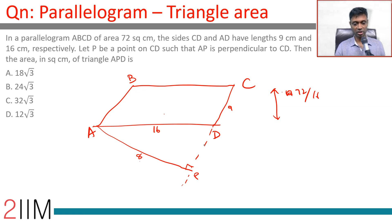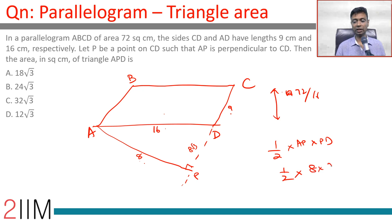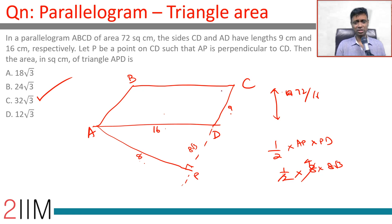The area of triangle APD is what we need to find. We have AP = 8 and AD = 16, so this is a 30-60-90 triangle with ratio 1 : √3 : 2. Since this is a right angle triangle with hypotenuse 16 and one leg 8, the other leg PD is 8√3. Therefore, area of triangle APD = half × AP × PD = half × 8 × 8√3 = 32√3 square centimeters.